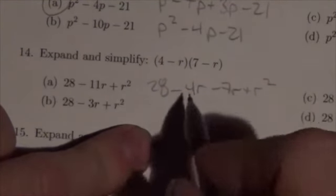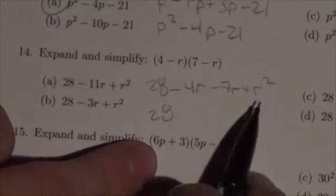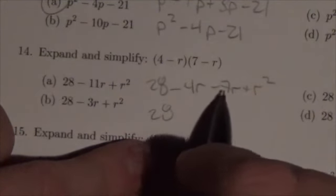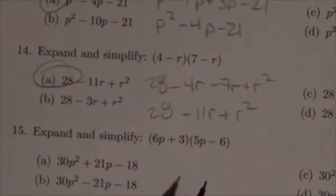Now putting that together, we've got 28, now this is kind of a weird order to put it in but whatever, negative 4r, negative 7 is going to be negative 11r plus r squared, and then the answer is A.